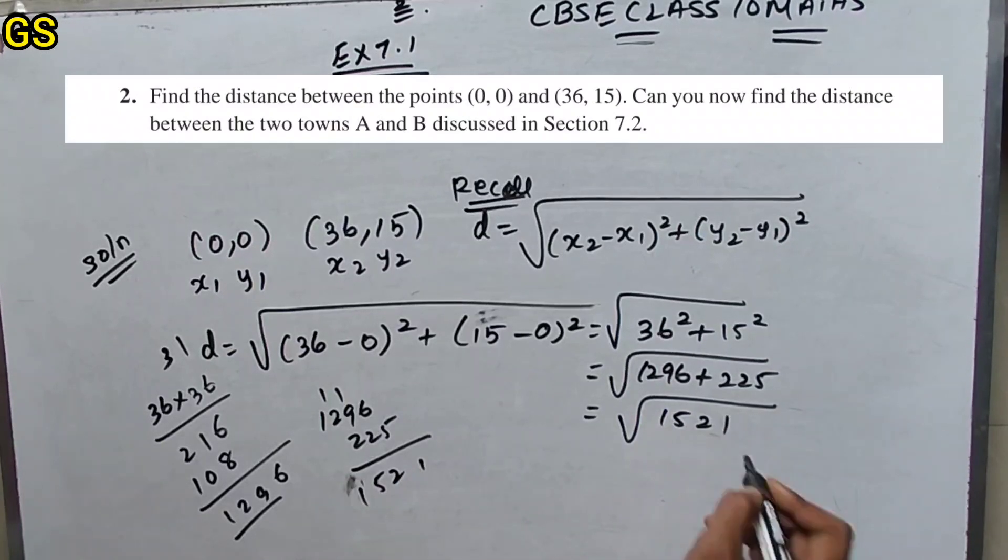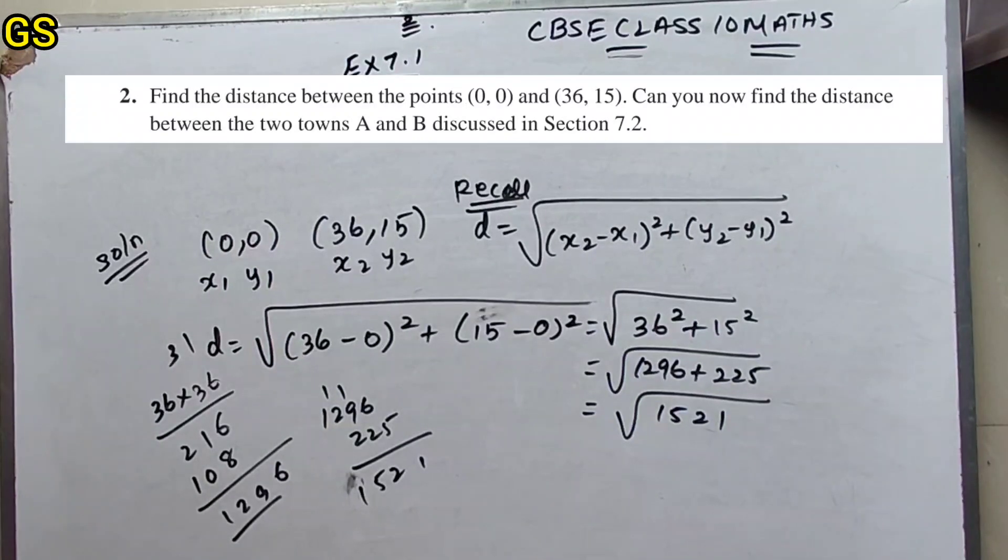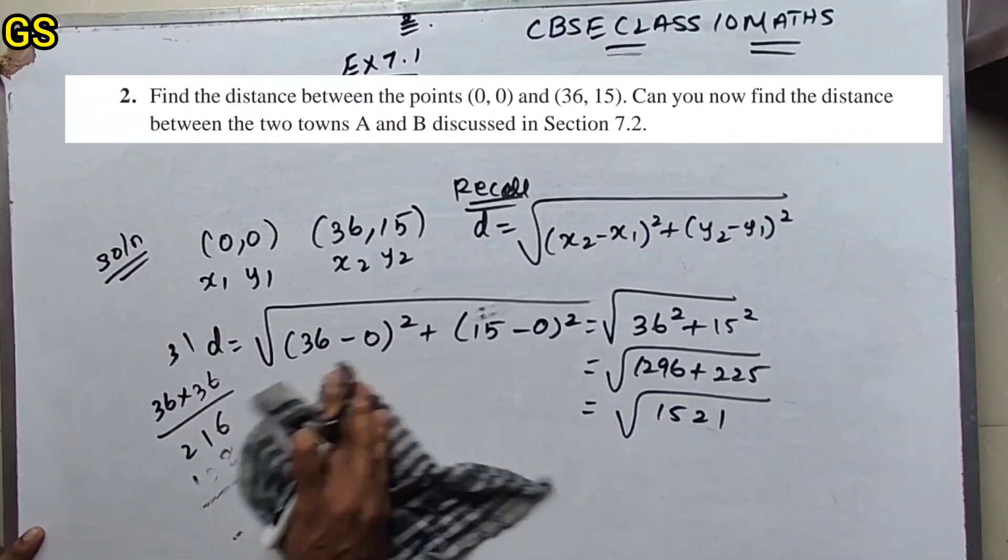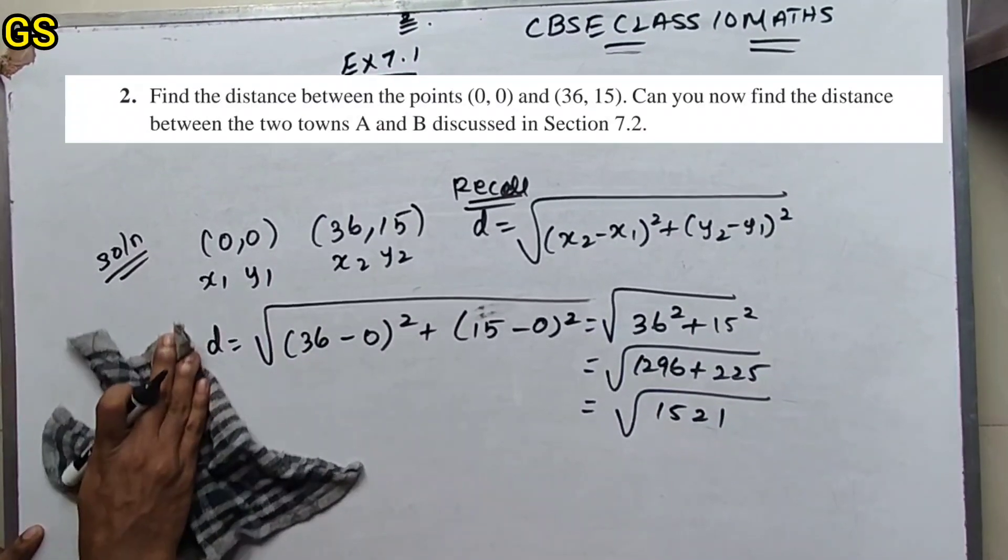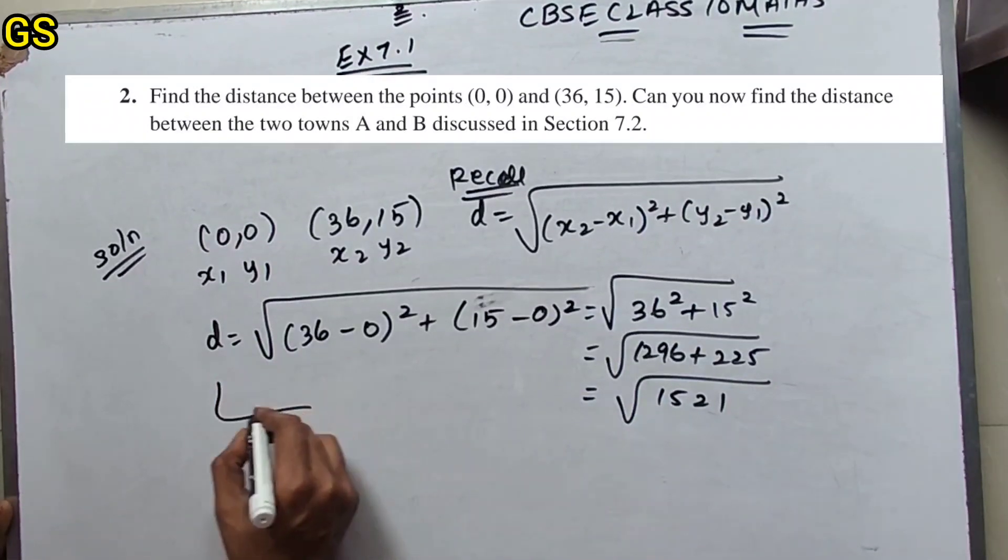So 1521. 1521 is the same. Square root of 1521.